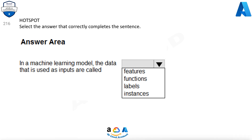Question 216. In a machine learning model, the data that is used as inputs are called what? Options are: features, functions, labels, instances. The correct option is features.